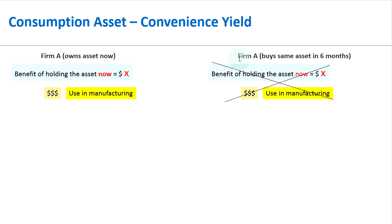If firm A enters into a future — say firm A buys the same asset in six months time, so that's a six month future — then firm A will lose that benefit of holding the asset now. In other words, that same asset when it's part of a futures contract, you will not have that benefit of holding the asset now.